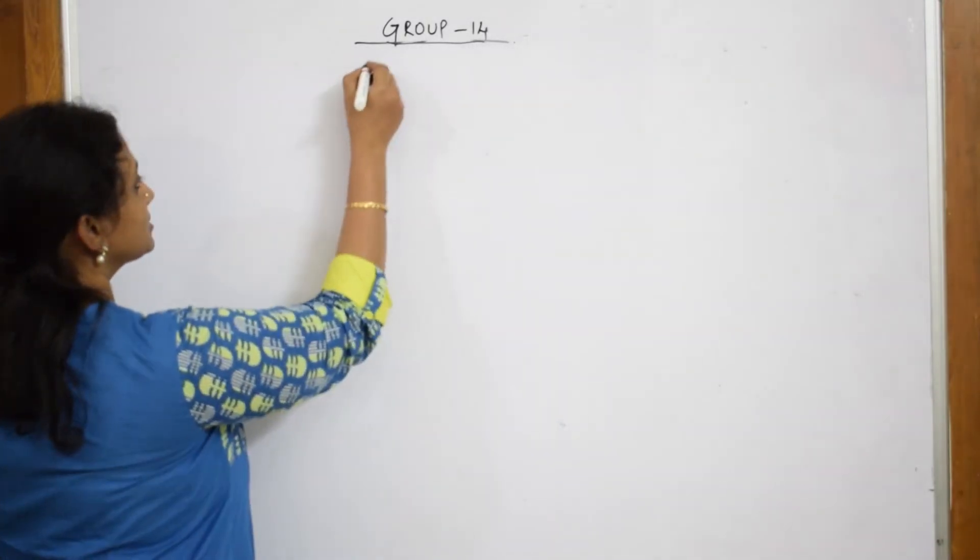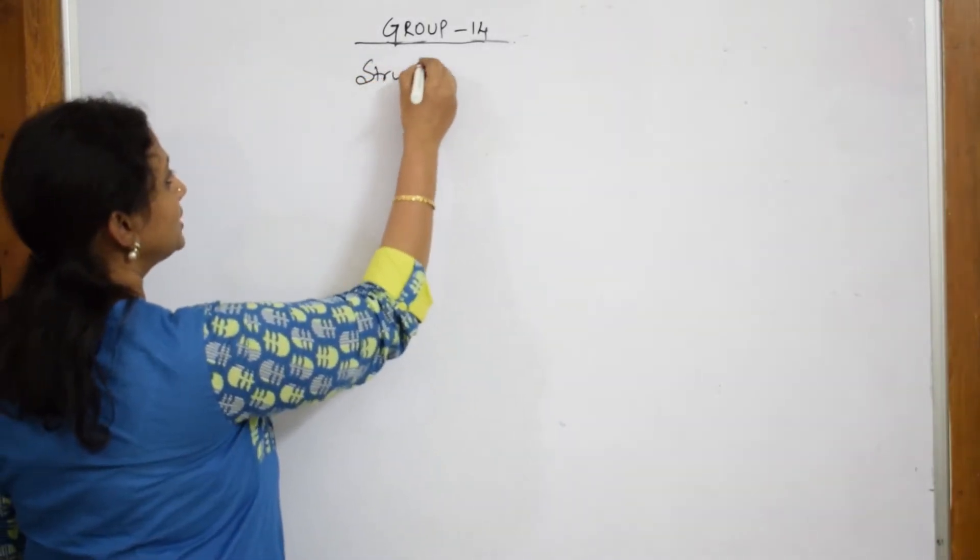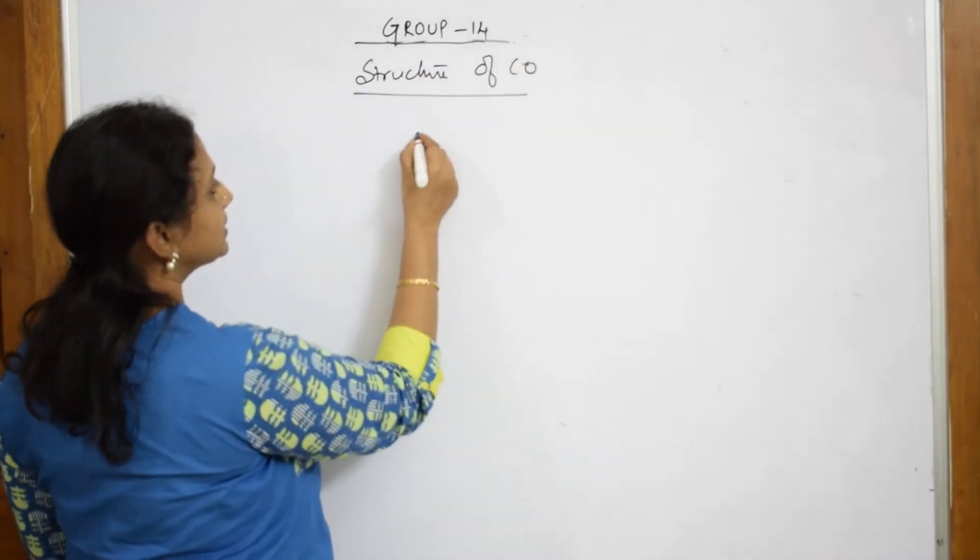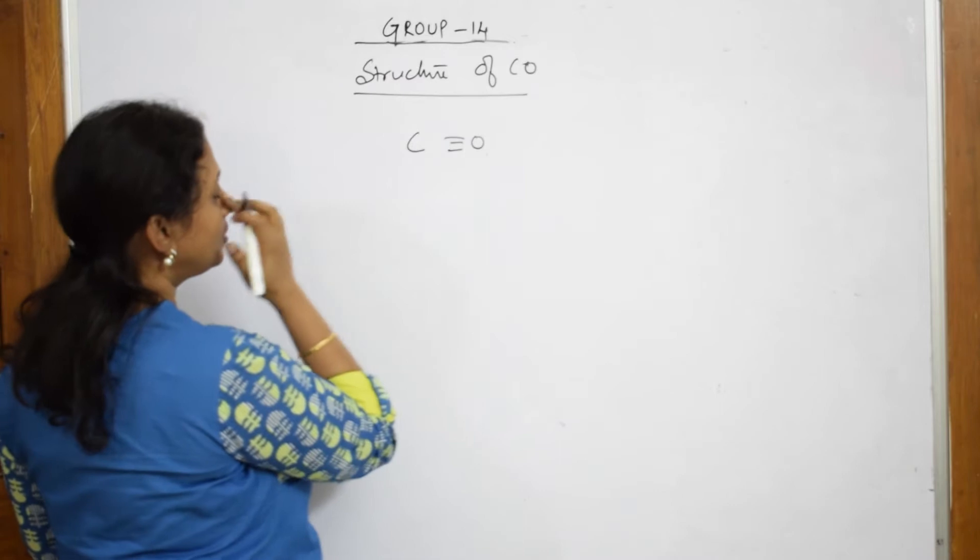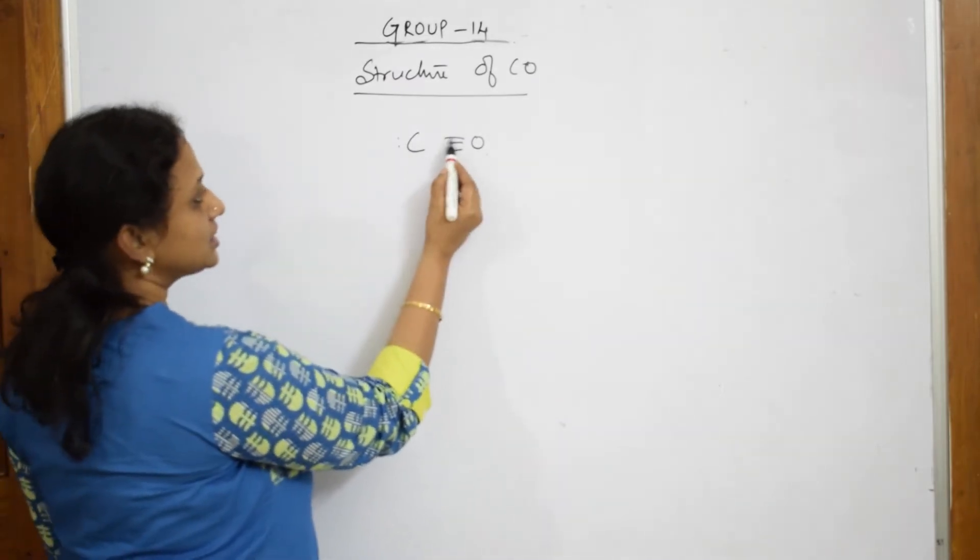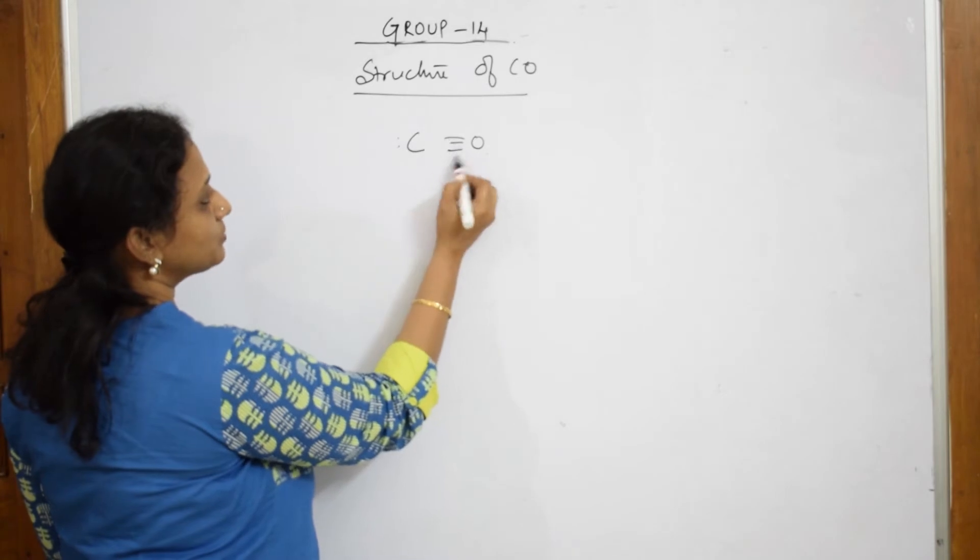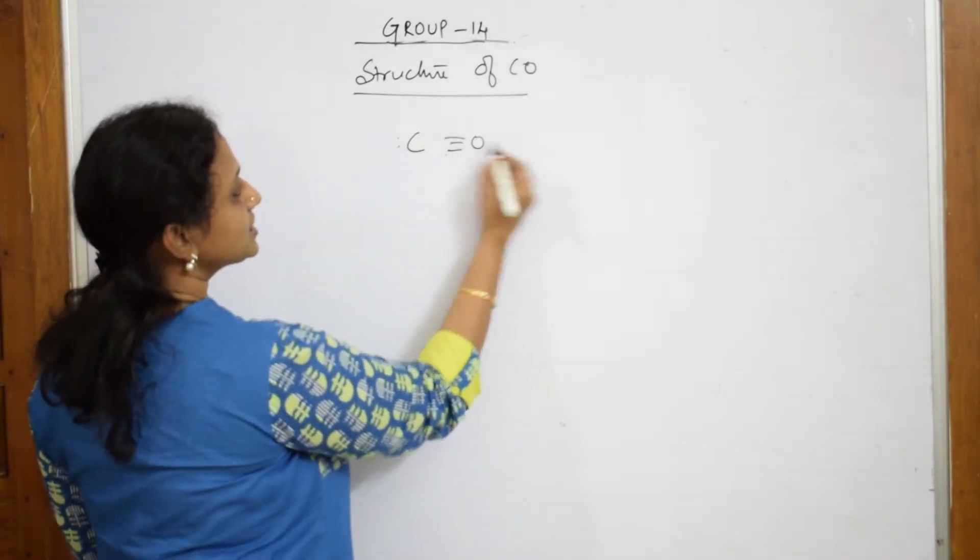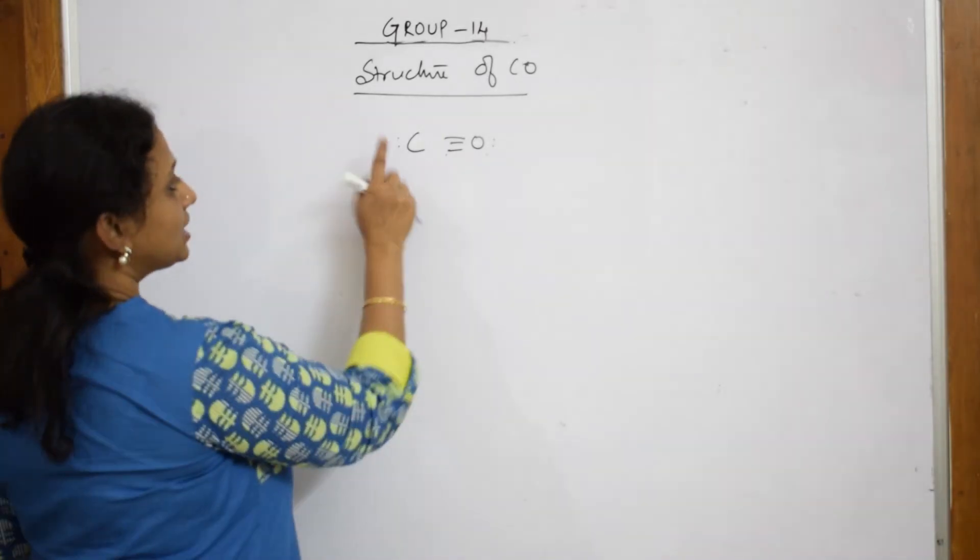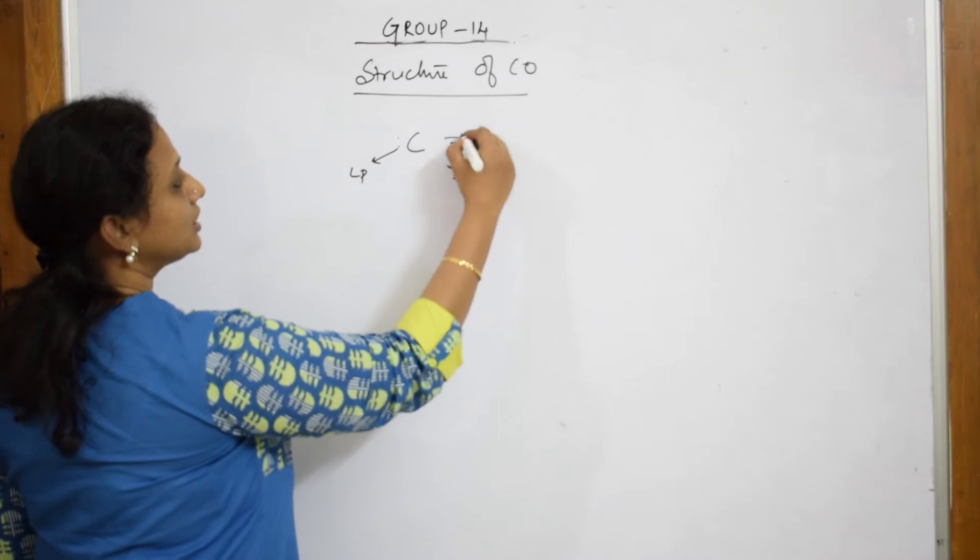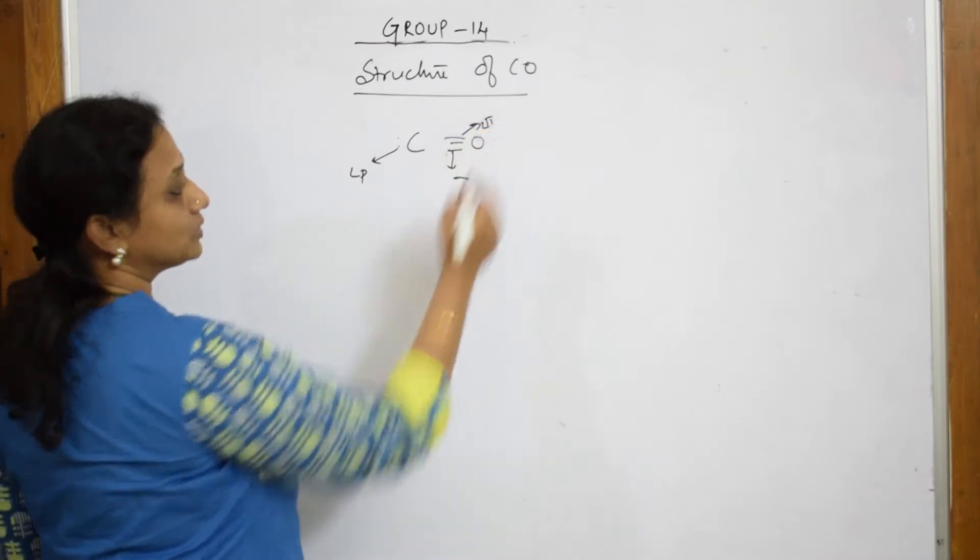When I write the structure of carbon monoxide, it has C triple bond O. So one, two, three, four, five, six, seven, eight. The octet is completed. These are your lone pair of electrons. And this is your sigma bond and these are your pi bonds, two pi bonds.